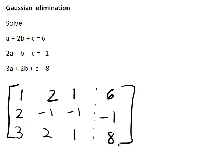It's often a good idea when we're doing Gaussian elimination to write row sums at each stage, as these can help check the accuracy of the calculation. For the first row, one plus two plus one plus six gives a row sum of ten. For the second row, two minus one minus one minus one gives a row sum of negative one.